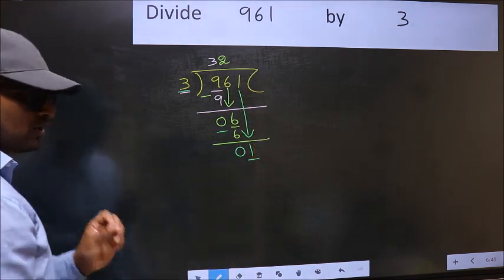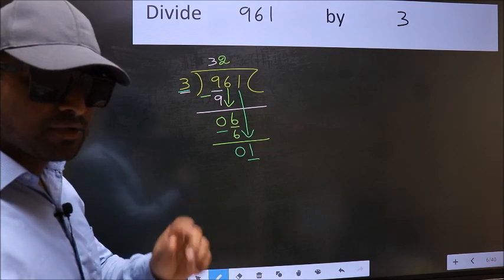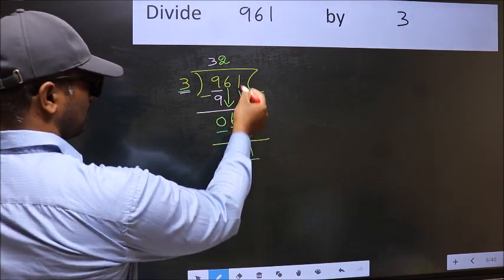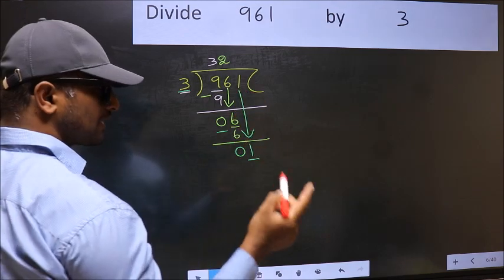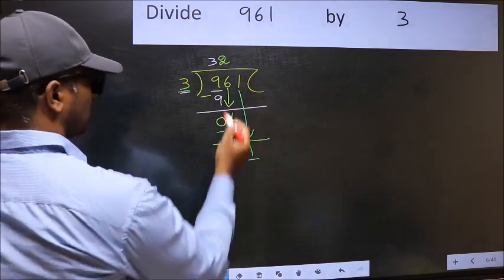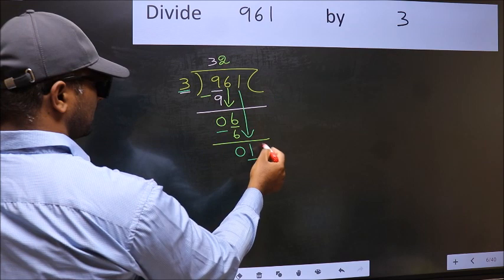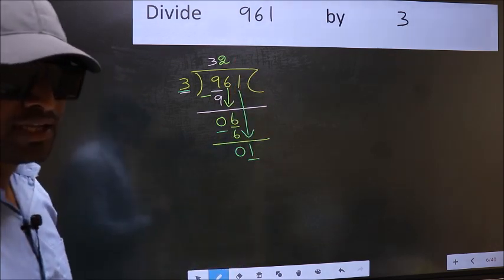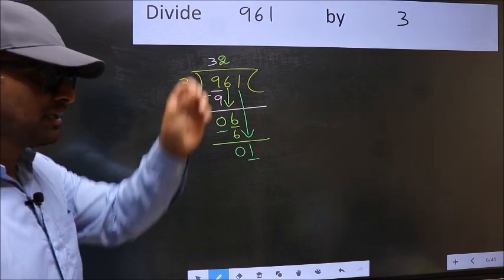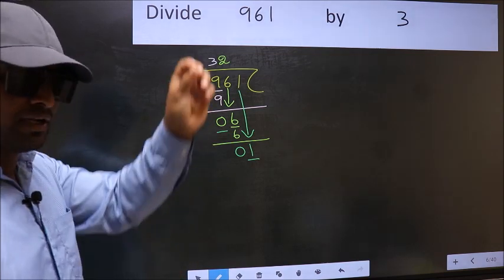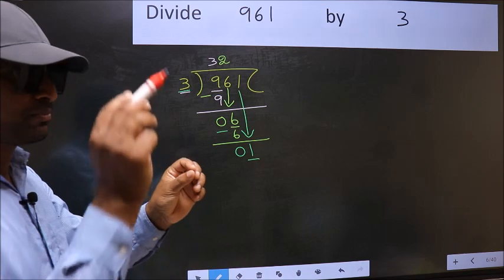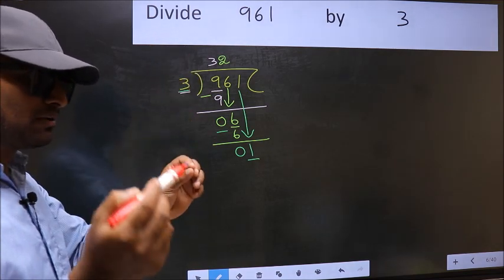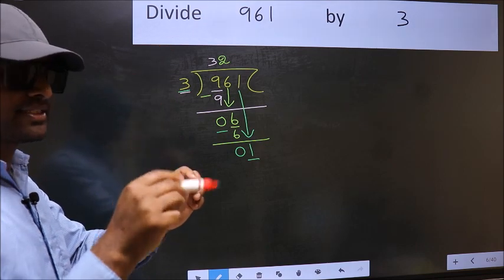Which is wrong. Why is it wrong? Because just now you brought this number down, and in the same step you want to put a dot and take 0 — which is wrong. You should not be bringing the number down and also putting a dot and taking 0 in the same step.